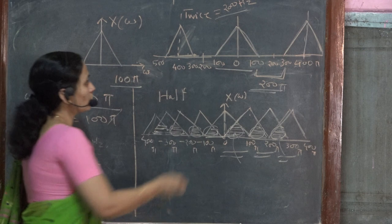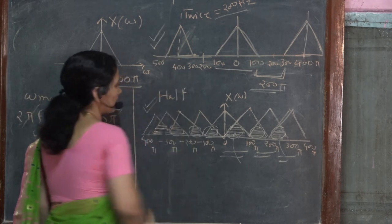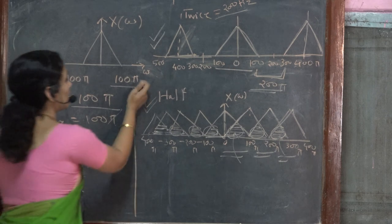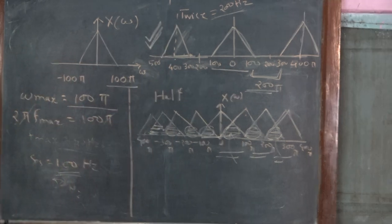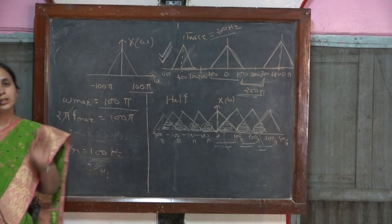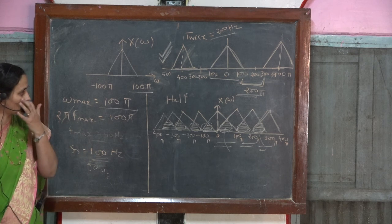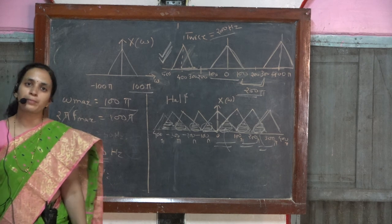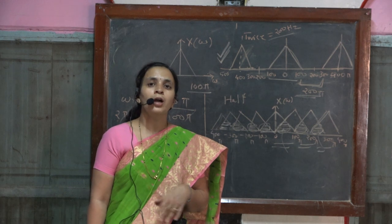So this is the correct choice if I follow the Nyquist theorem for the task of obtaining the digital signal. Now I feel with this discussion, the idea of sampling theorem and the idea of Nyquist frequency is quite clear to you.